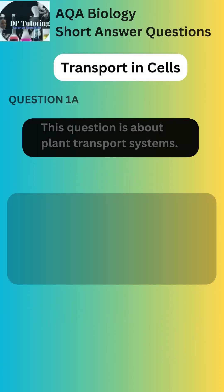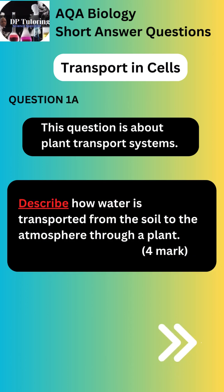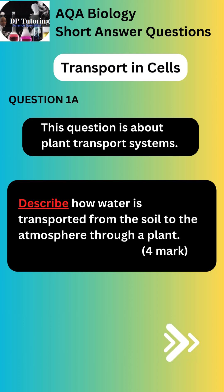Part A of this question asks you to describe how water is transported from the soil to the atmosphere through a plant. The opening statement sets the tone to help you think by stating the question is about plant transport systems. You need to know: 1. How is water transported? 2. How is water lost from the plant to the atmosphere? Pause the video and check your understanding before you continue.